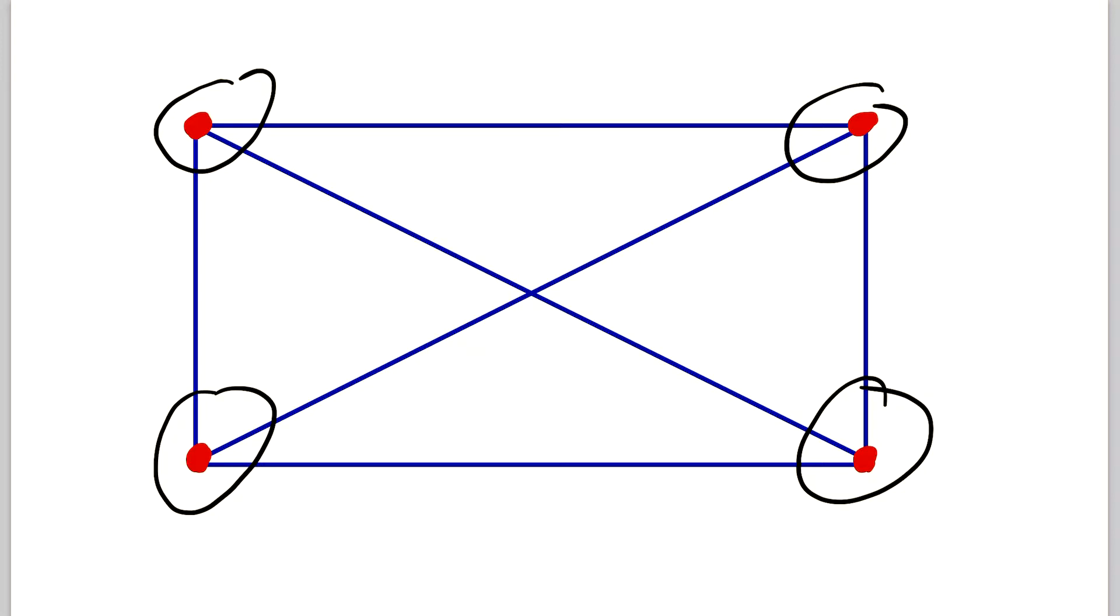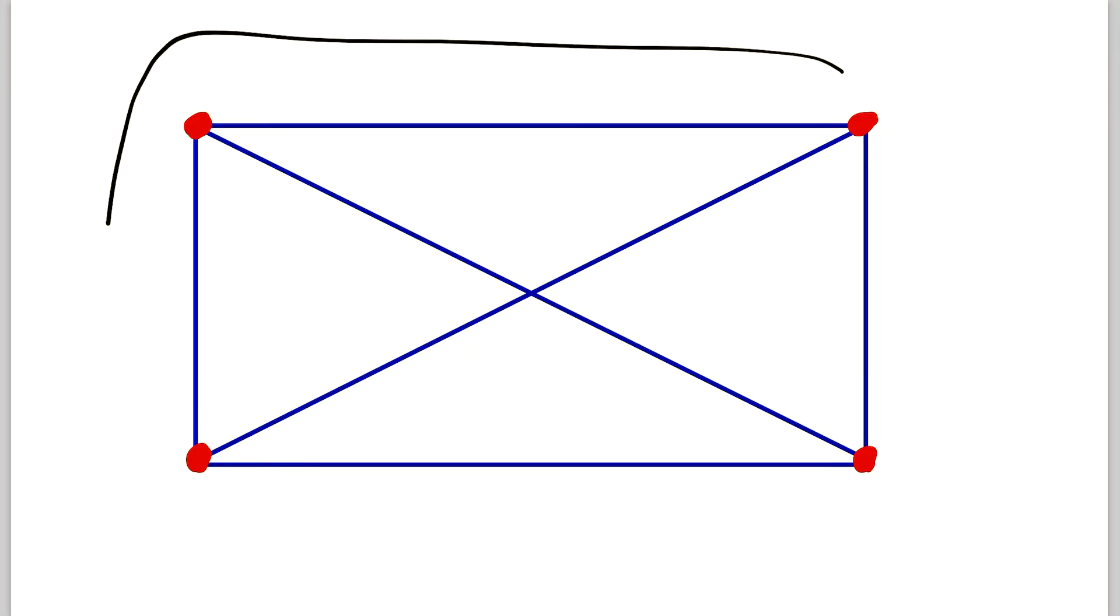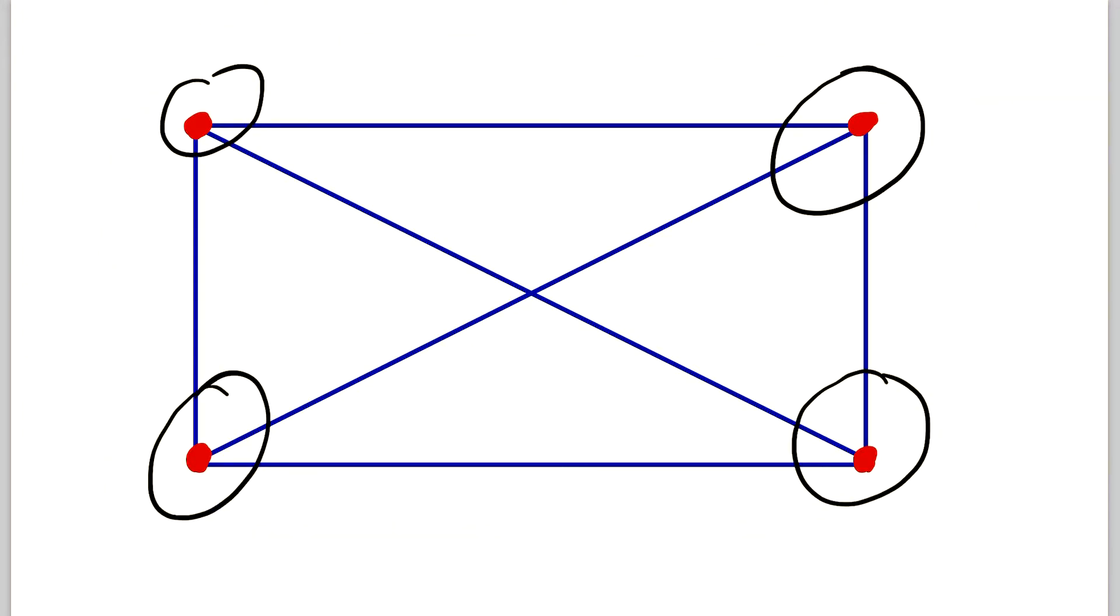If you don't know what a regular graph is, then let's quickly talk about that. So this here is a regular graph because every vertex in the graph has the same degree. The degree of a vertex is the number of edges incident to the vertex, which is the same as saying that the degree of a vertex is the number of vertices it is adjacent to.